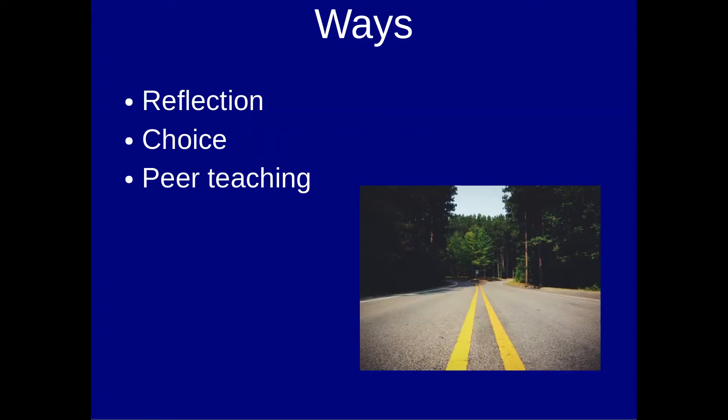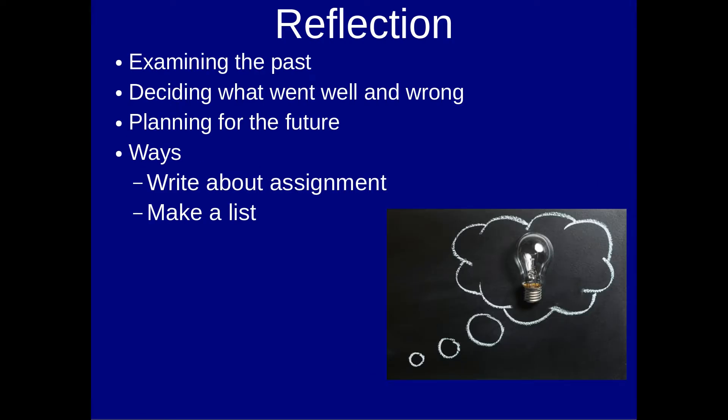Now, having said that, there are several ways you can do this, but I'm going to talk about three of them. The three ways that you can use to help your students become autonomous or independent learners are reflection, choice, and peer teaching. So let's go through each of these one at a time.